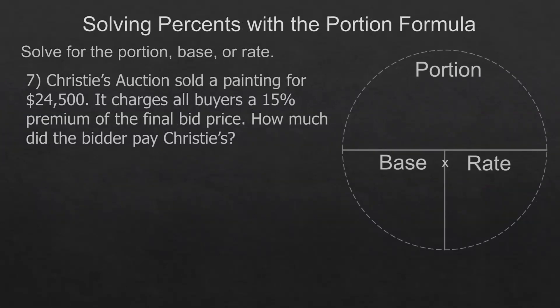Christie's auction sold a painting for $24,500. It charges all buyers a 15% premium of the final bid price. How much did the bidder pay Christie's? There's a couple of different ways of working this. We're going to pay the full amount, so that's 100% plus another 15%. $24,500 is 100% and then we're going to pay an additional 15%, so it's actually going to be 115% of the price. You can actually set your problem up this way and it's a quicker way to get there.